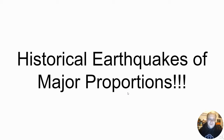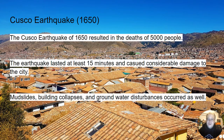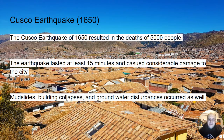Here are some historical earthquakes of major proportions. The first is the Cusco earthquake of 1650. This earthquake resulted in the deaths of about 5,000 people and lasted at least 15 minutes. It caused considerable damage to the city, including mudslides, building collapses, and disturbed groundwater. The only reason we know about this is because Spain had already conquered the area, so it's in the Spanish record.